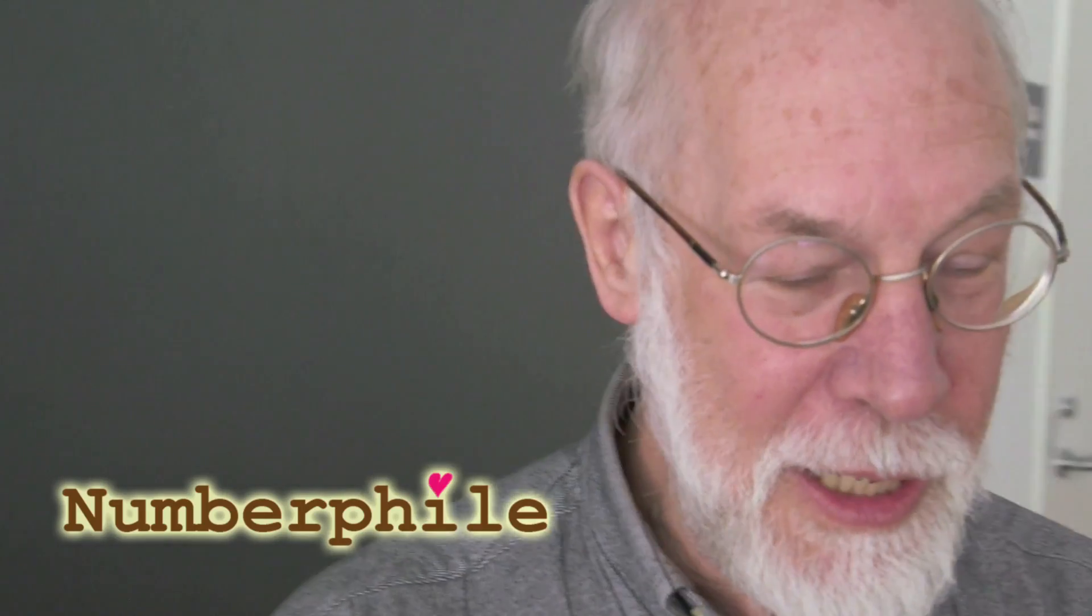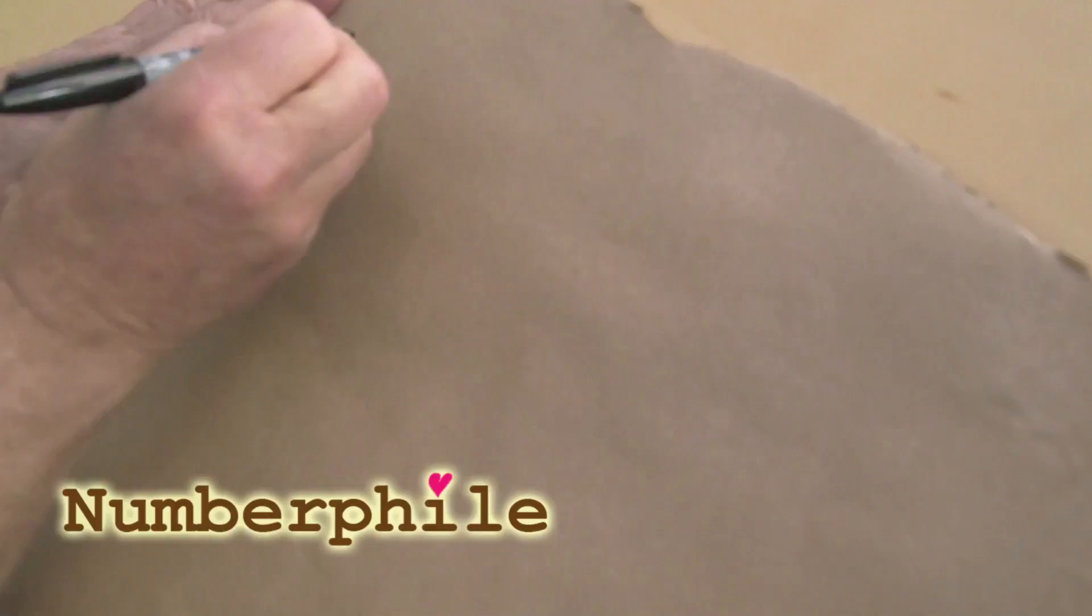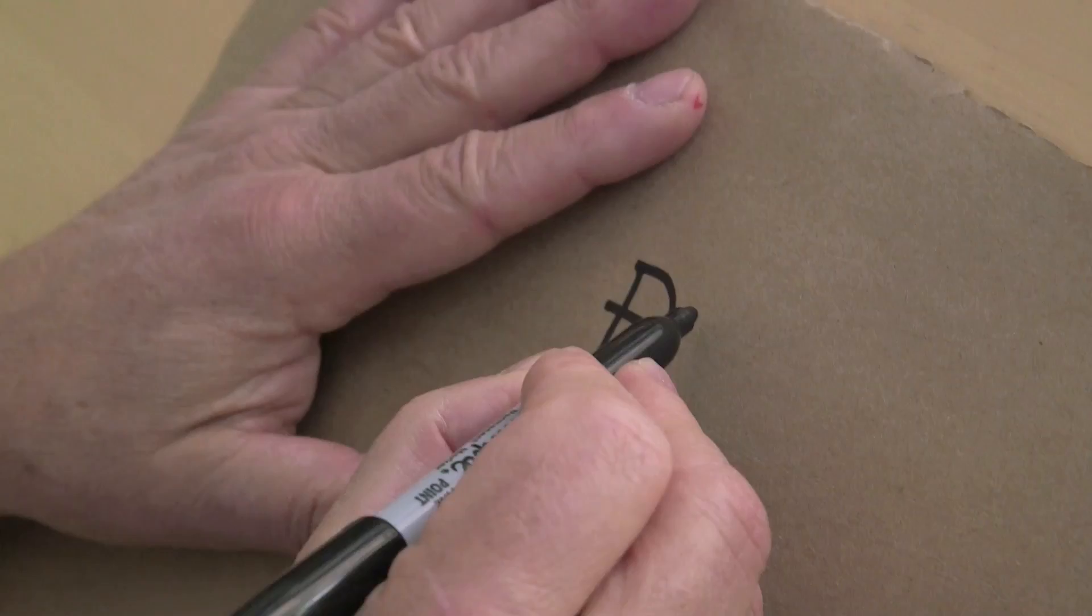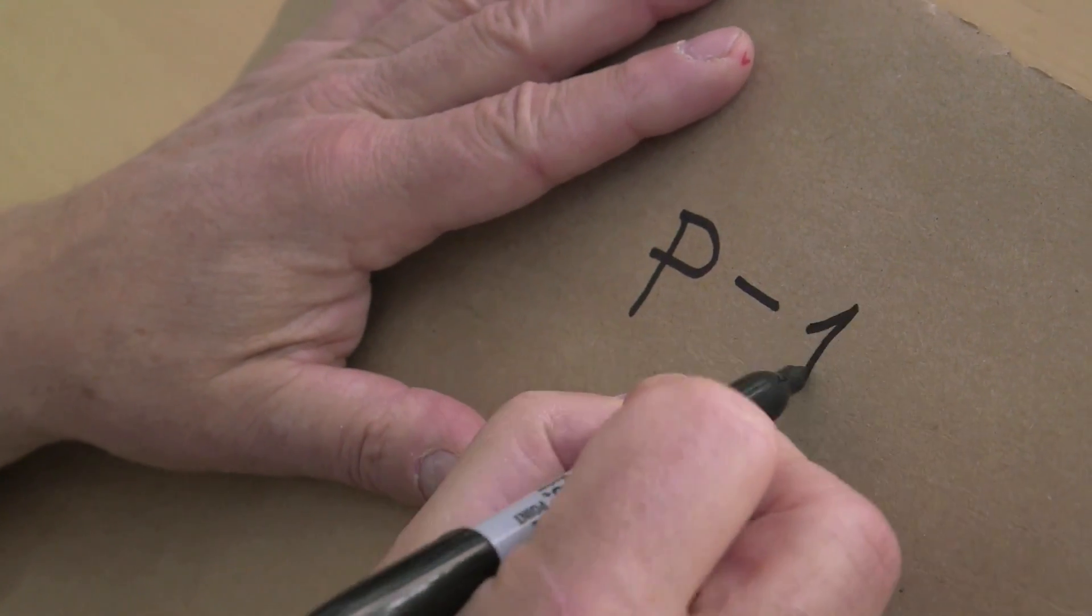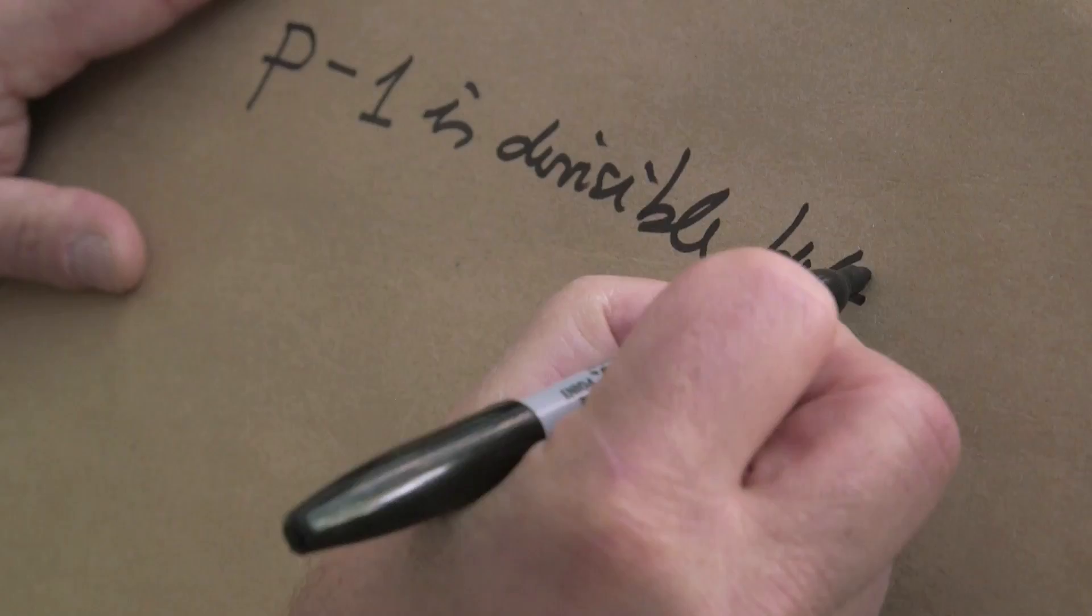We're going to start by writing down the original equation again. First of all, we start with the prime p, and we assume that p minus 1 is divisible by 4.